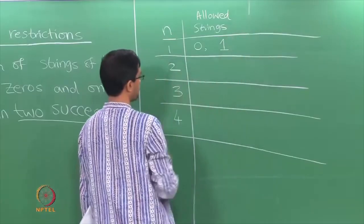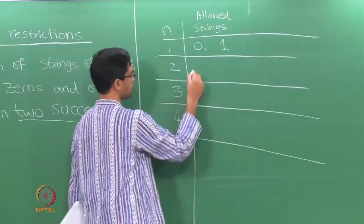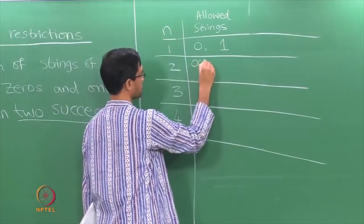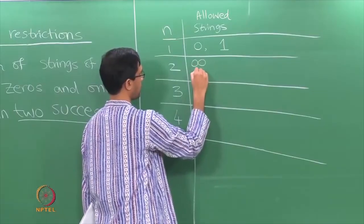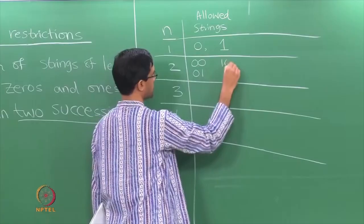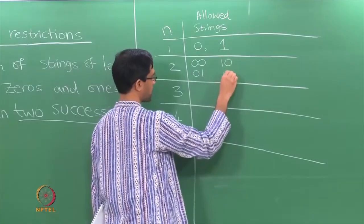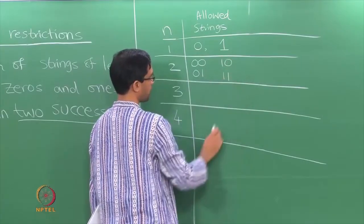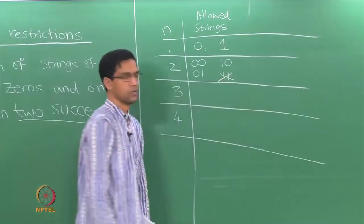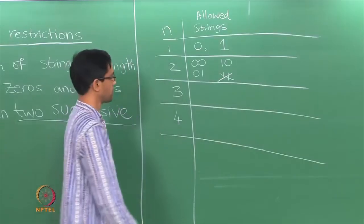For n equals 2, I have a string of length 2. I could have 00, 01, or 10. The fourth possibility, 11, is no longer allowed because you have 2 successive 1s.